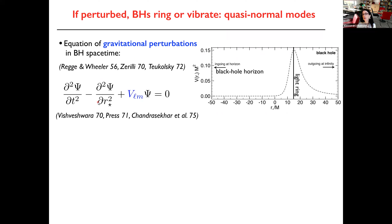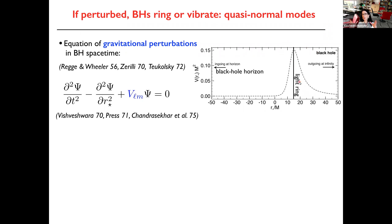There is no dependence on m in the perturbation because of spherical symmetry, but there is a dependence on l. You end up with an equation of this kind for the perturbations with a potential, where r-star is the tortoise coordinate in Schwarzschild. This plot shows the potential as a function of r-star. When you go to minus infinity, you go to the black hole horizon; when you go to plus infinity, you are very far from the black hole. This potential peaks at a particular point in the Schwarzschild geometry called the light ring or photon orbit.